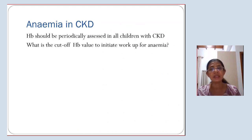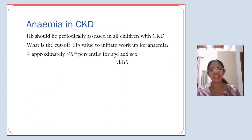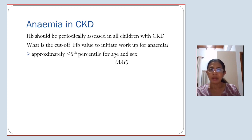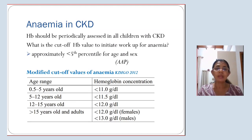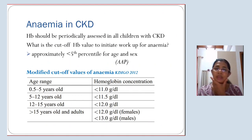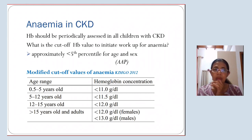Anemia is another common complication of CKD; hemoglobin should be periodically assessed in all children. Workup for anemia should begin when hemoglobin is below the 50th percentile for age and sex. KDIGO 2012 proposed modified cut-off values: below 11 g/dL for those up to 5 years, 11.5 g/dL for ages 5 to 12, 12 g/dL after 12 years, and 13 g/dL for males after 15 years.